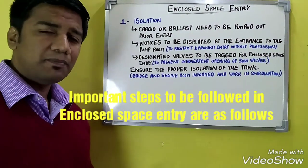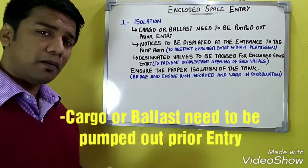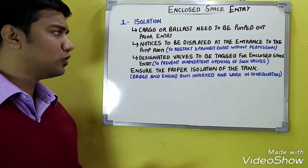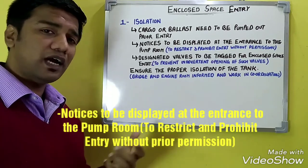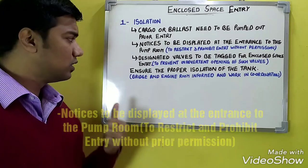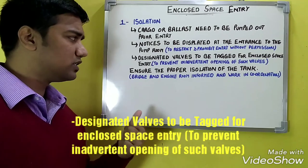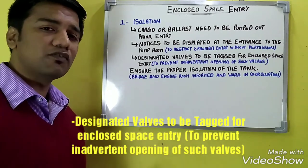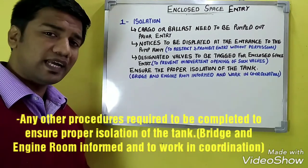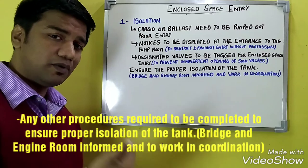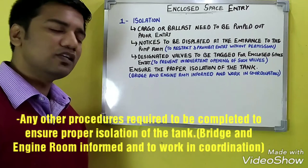The first step in enclosed space entry is isolation. Cargo or ballast need to be pumped out prior to entry. Notices are to be displayed at the entrance of the pump room to restrict and prohibit entry without permission. Designated valves are to be tagged for enclosed space entry to prevent inadvertent opening. Ensure proper isolation of the tank, with the bridge and engine room kept informed and working in coordination.